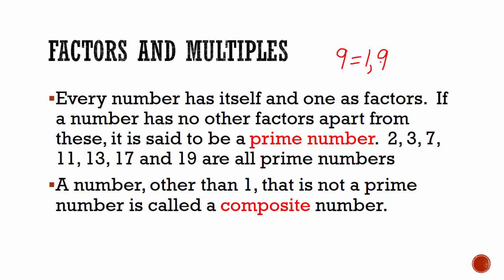But can any other number multiply by a number to give you 9? Yes, we see that 3 can also be multiplied by itself to give you 9. So, since 1 and 9 are not the only factors of 9, then 9 is not a prime number.